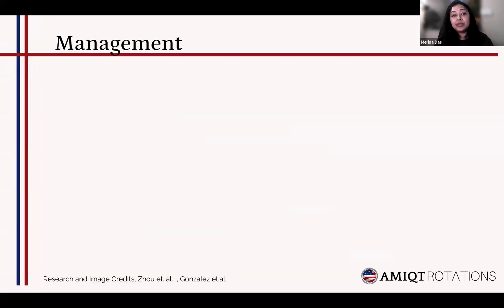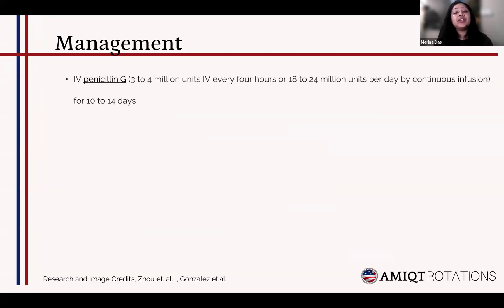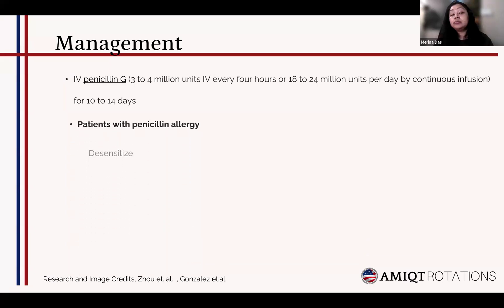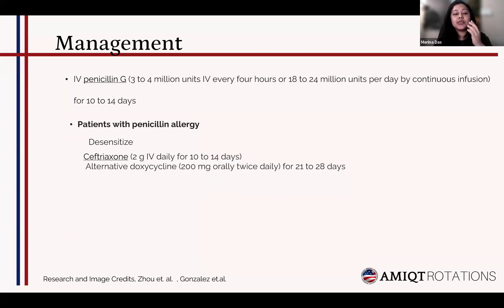For management, the treatment of choice is IV penicillin, given for 10 to 14 days — 3 to 4 million units IV every four hours by infusion. If a patient is penicillin-allergic, we prefer desensitization because penicillin has the highest efficacy. When desensitization is not possible, alternative therapies like ceftriaxone or doxycycline can be used. Ceftriaxone is given for 10 to 14 days and doxycycline for 21 to 28 days.